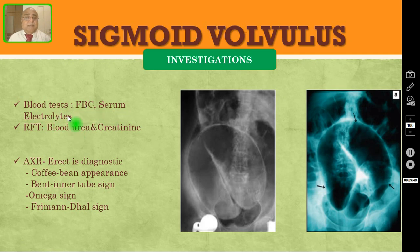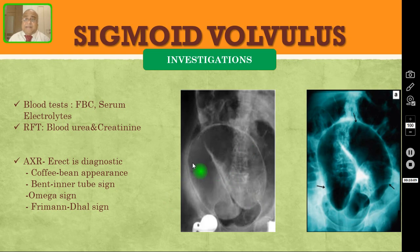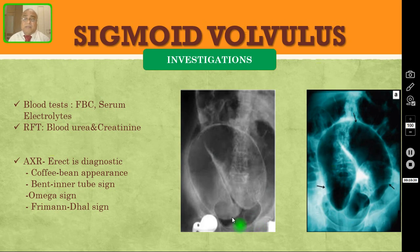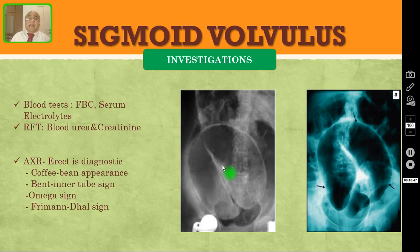You have to do blood tests — full blood count and serum electrolytes — and you should also do renal function tests, that is blood urea and creatinine. But the gold standard investigation in these patients is the abdominal X-ray erect — that is diagnostic. You are seeing two pictures, both showing the same findings. This appearance — enormous dilatation of the sigmoid colon — has a characteristic coffee bean appearance. You can see three linear lines converging in the left iliac fossa; this sign is called the Frimann-Dahl sign. This coffee bean appearance is also known as the bent inner tube sign and the omega sign.